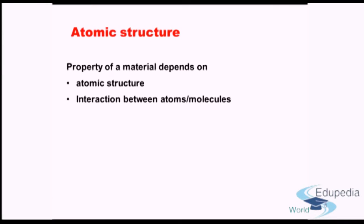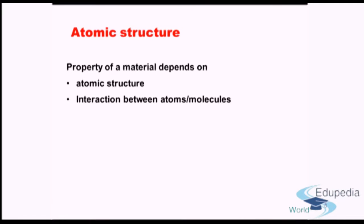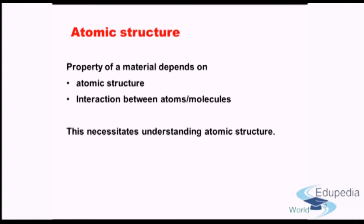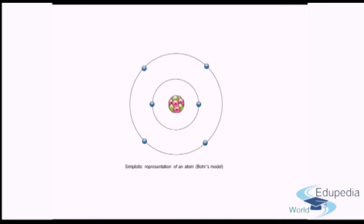Why do we need to know atomic structure to understand material science and engineering better? The properties of a material depend on atomic structure on one hand, and the interaction between atoms and molecules on the other. Therefore, the basic building block of the material will help define the properties for which the material is being used, and the constituent atoms will interact with each other via different forces, affecting those properties.